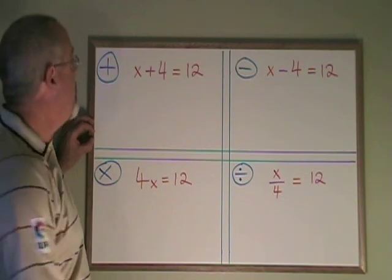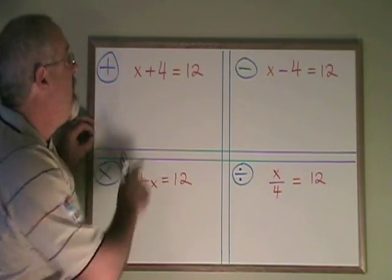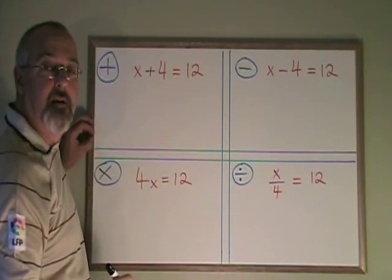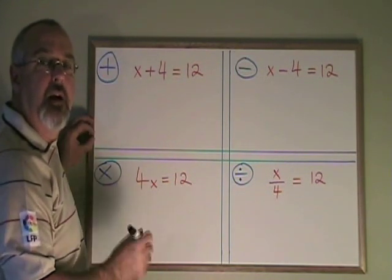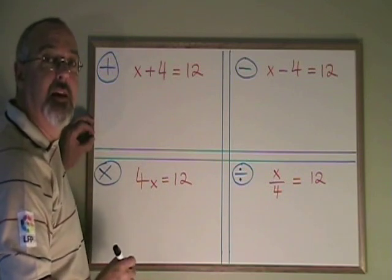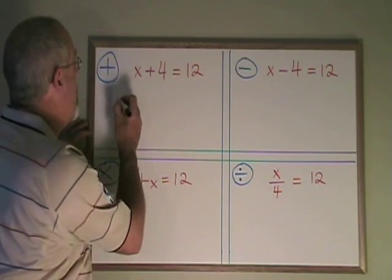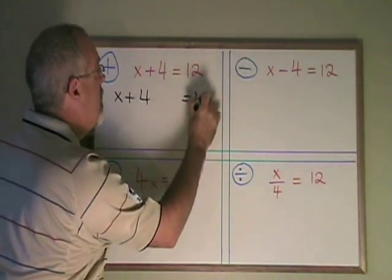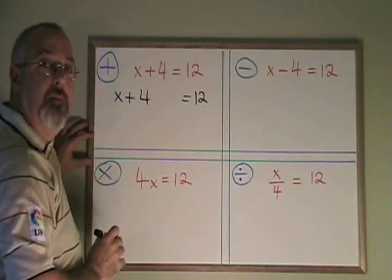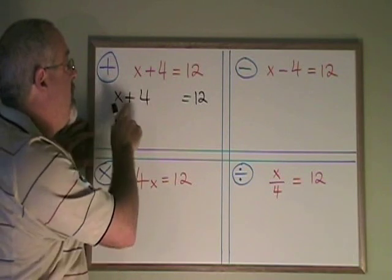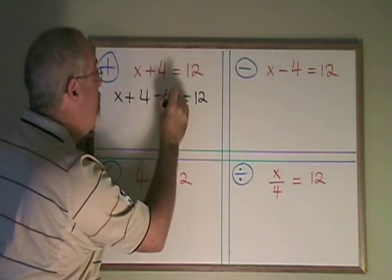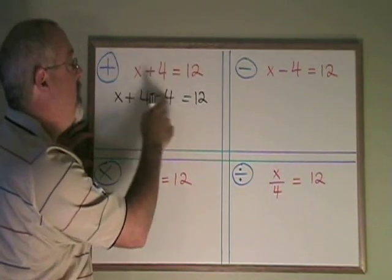Let's look at the first example, which is addition. Here our x has a 4 with it. The 4 is being added to the x. How do I get the 4 away from the x so that the x can be alone? What I do is I do the opposite of adding 4. If 4 is being added to the x, I subtract a 4, because these 4s will now cancel.